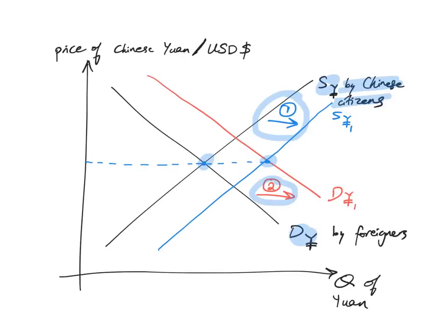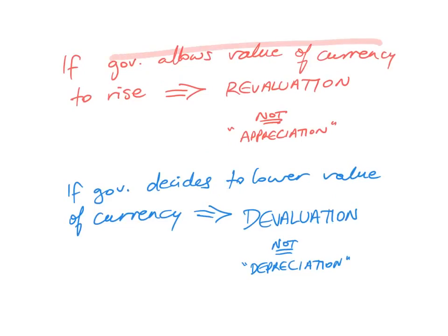So what if the government decides to allow the value of the currency to rise? If the government actively allows the value of the currency to rise we say there has been a revaluation. Remember it's not an appreciation. We use the term appreciation only in a floating exchange rate system when the forces of demand and supply allow the value to rise. When it's active government involvement in a fixed exchange system we use the term revaluation of the currency.